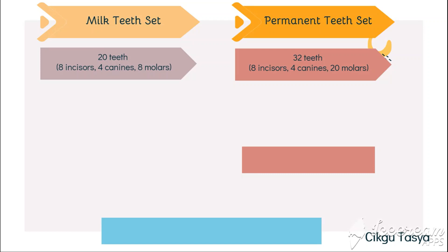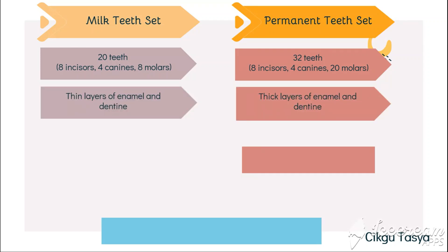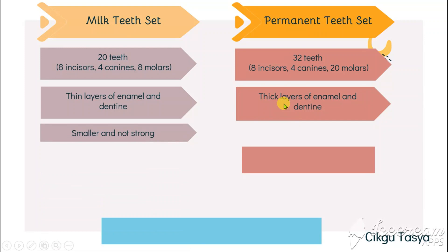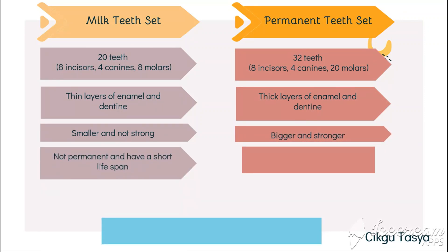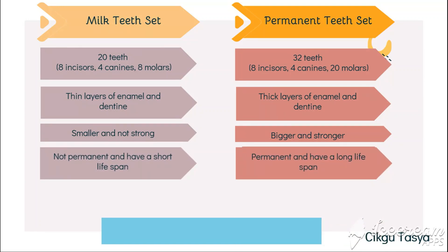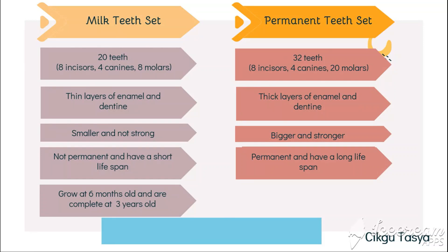Milk teeth have a thin layer of enamel and dentine, while permanent teeth have a thick layer of enamel and dentine. Milk teeth are smaller and not strong, whereas permanent teeth are bigger and stronger. Milk teeth are not permanent and have a short lifespan, while permanent teeth are permanent and have a very long lifespan.